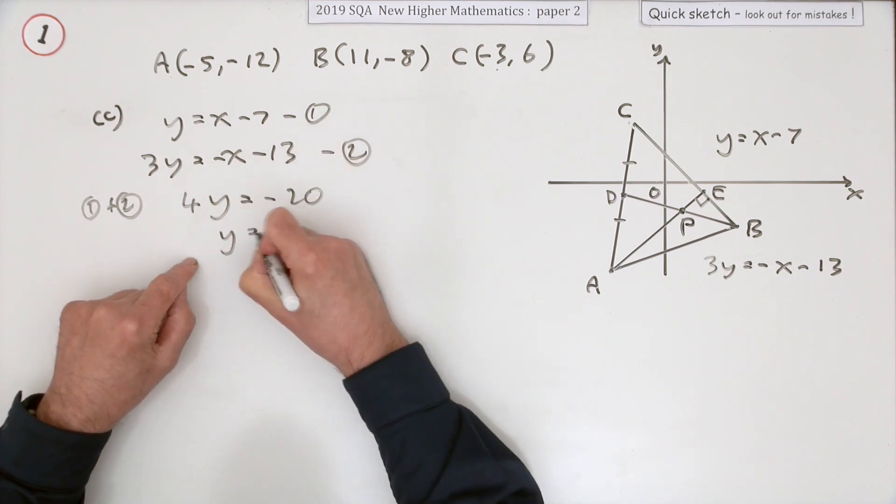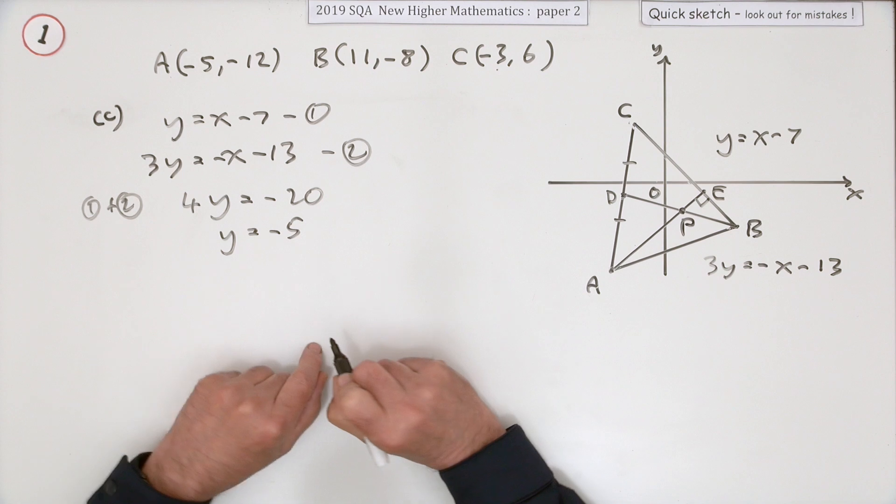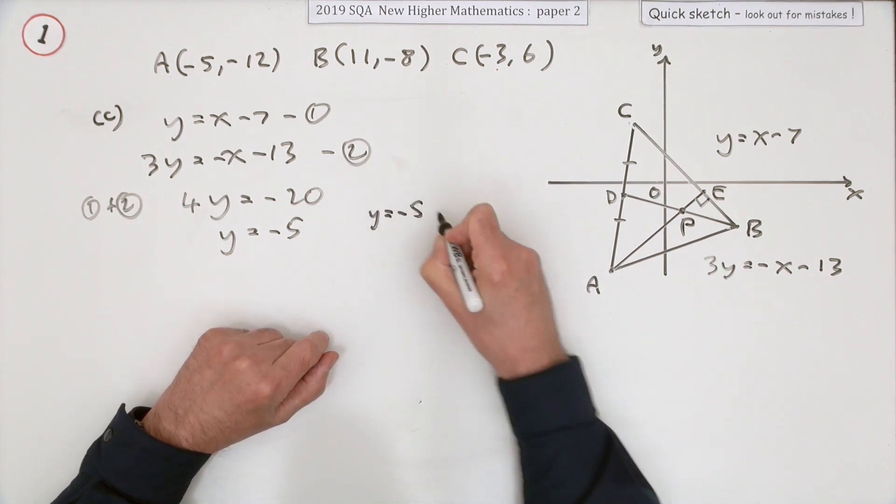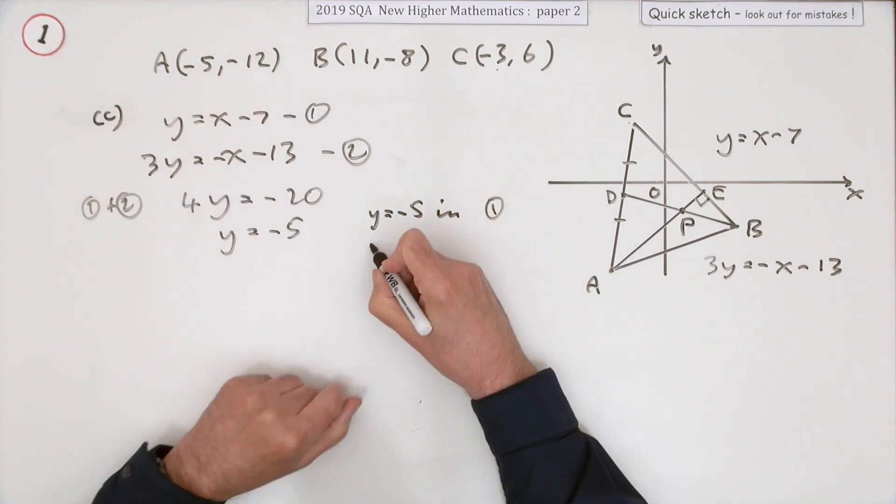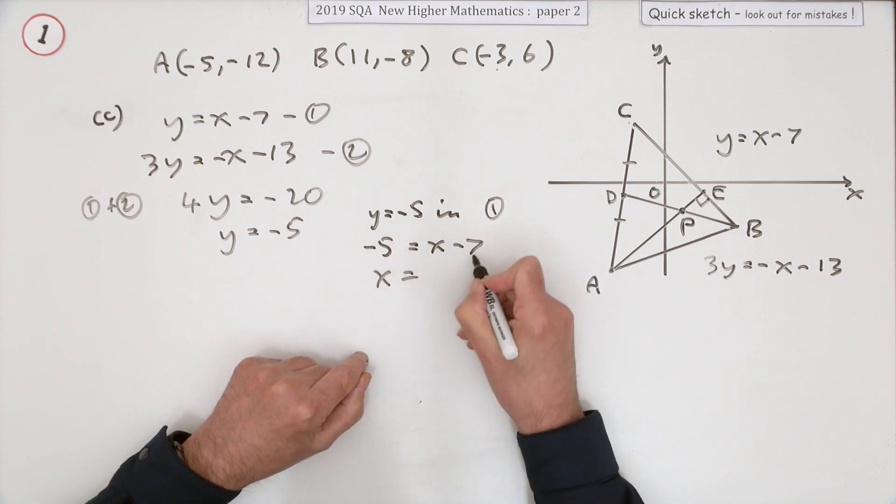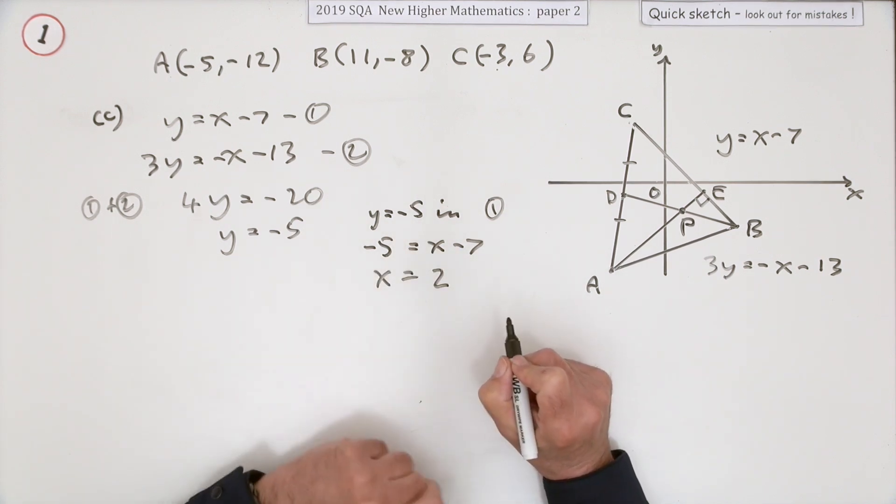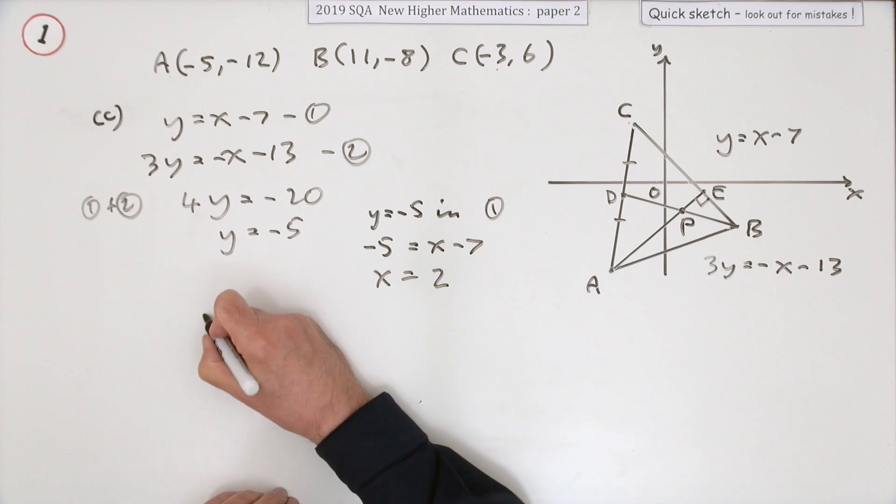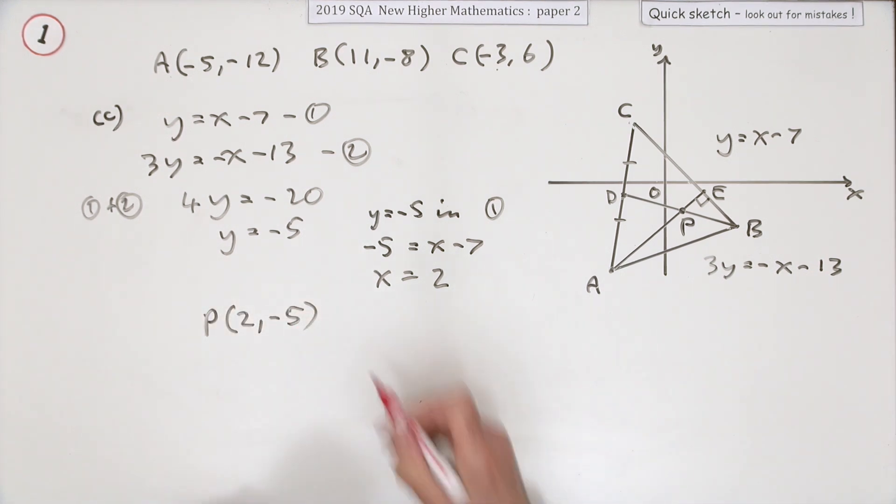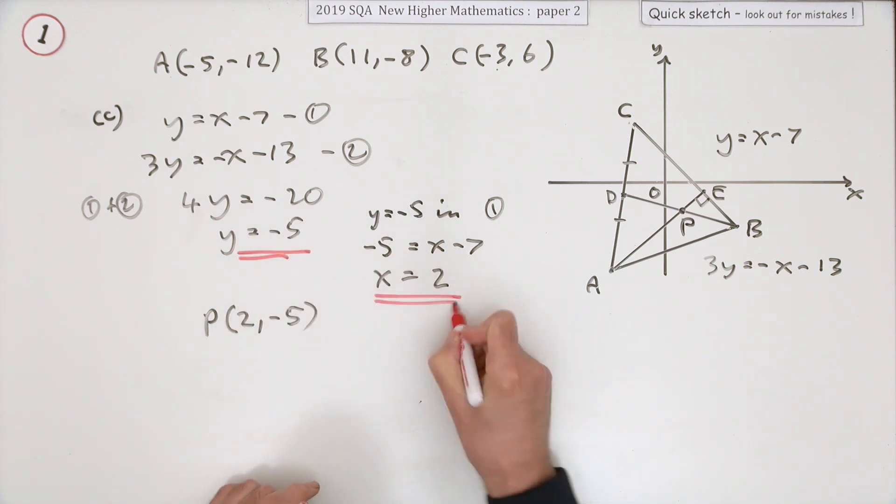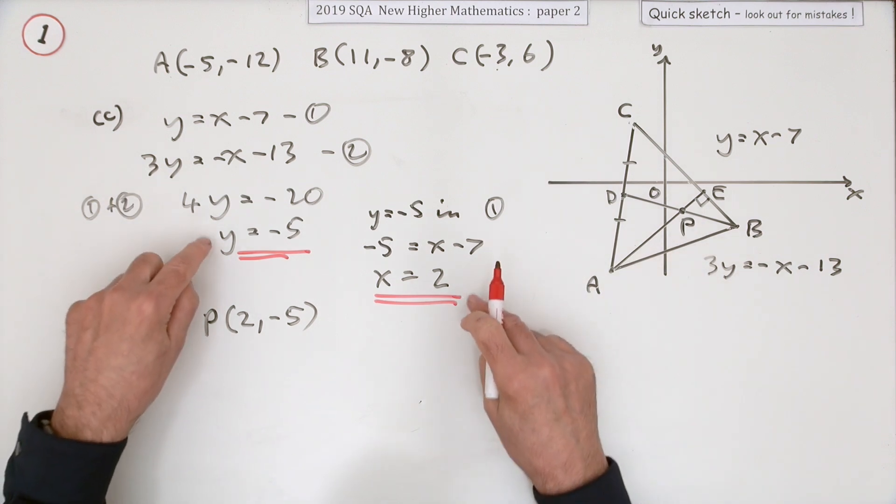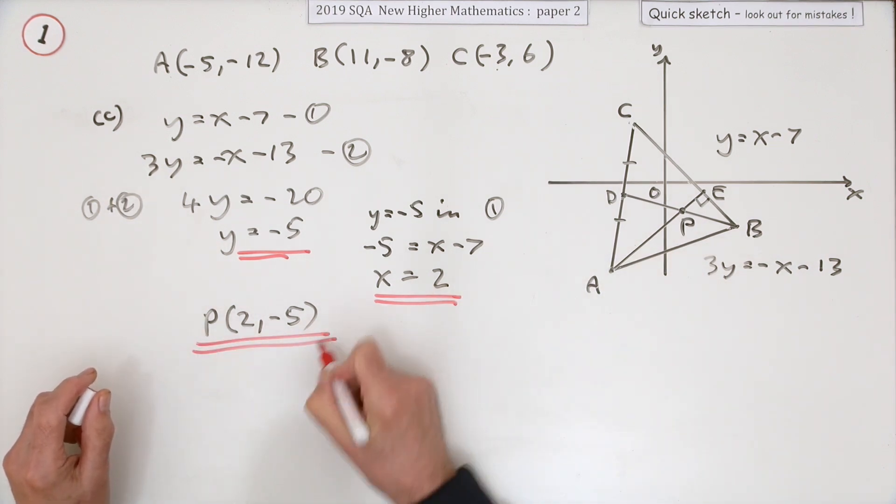You'll have 4y equals -20, so straight away y is -5. Knowing that, you can then put y is -5 in this one here. In which case you've got -5 is x minus 7, so x is, take that across and it becomes +7, giving a positive 2. So my point of intersection was (2, -5). But simply leaving it like this will get you the mark because those strictly speaking are the coordinates of the point of intersection. I just like to finish it off.